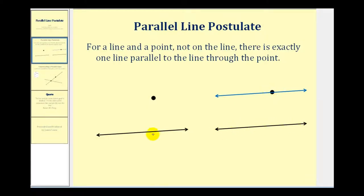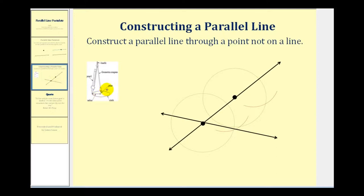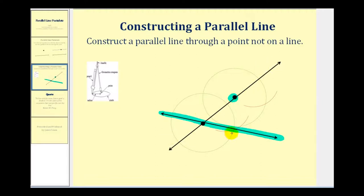Let's go through the procedure for constructing this parallel line through a point not on the line. What we'll need is a protractor and a straight edge. If we're given this line and this point, the first thing we'll do is sketch a line that intersects the given line and passes through the given point. So now we have two intersecting lines with a point of intersection and the original point.